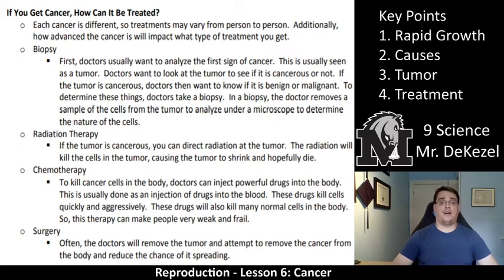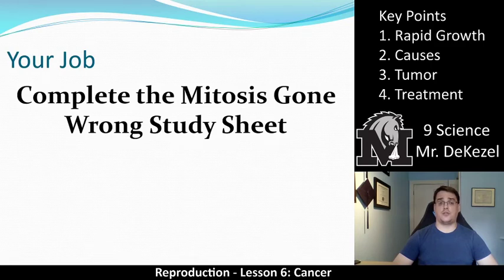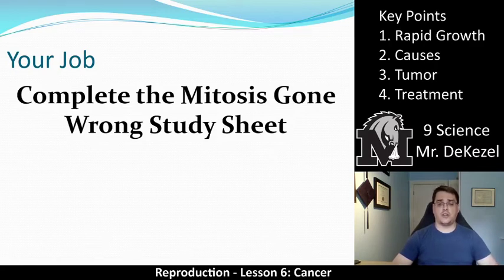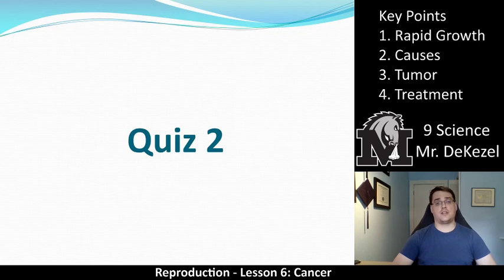I hope I was able to give you a good overview of what cancer is. Definitely read your notes in more detail, highlight and underline the important parts, and move on to the questions below. Your job is to complete the 'mitosis gone wrong' study sheet. Make sure you are familiar with the four key points: rapid growth in cancer, the causes of cancer, what a tumor is, and some treatments — as we have a quiz coming up. If you have any questions, let me know, and I'll see you in class. Thanks.